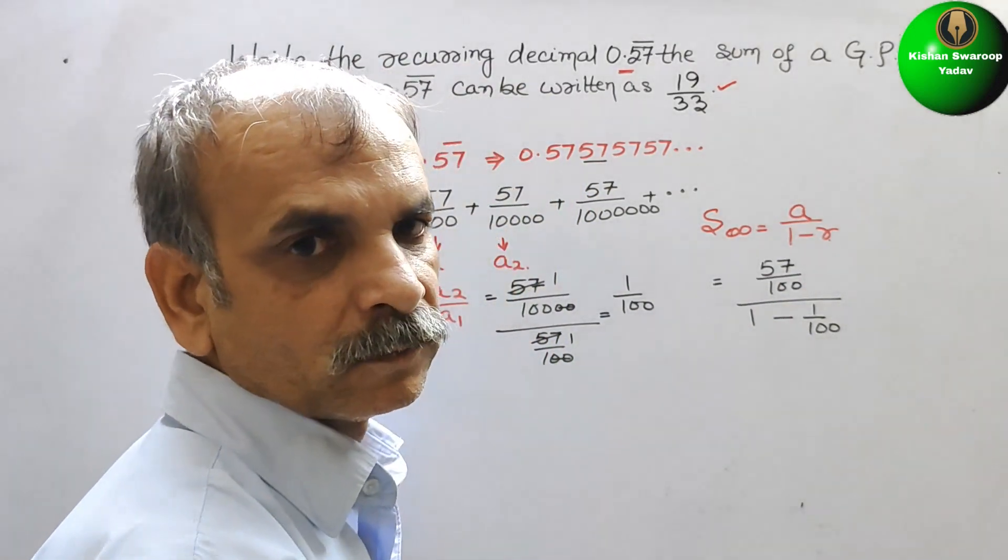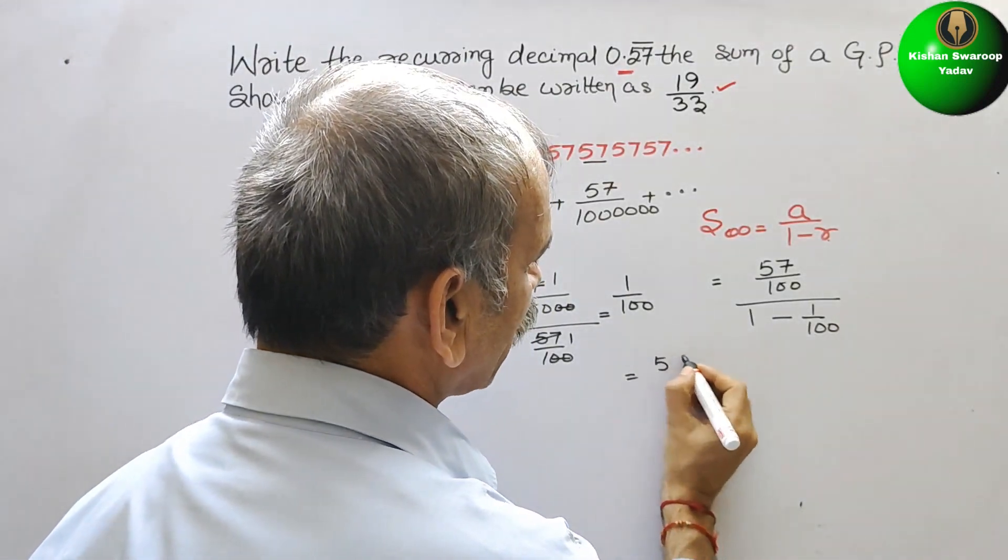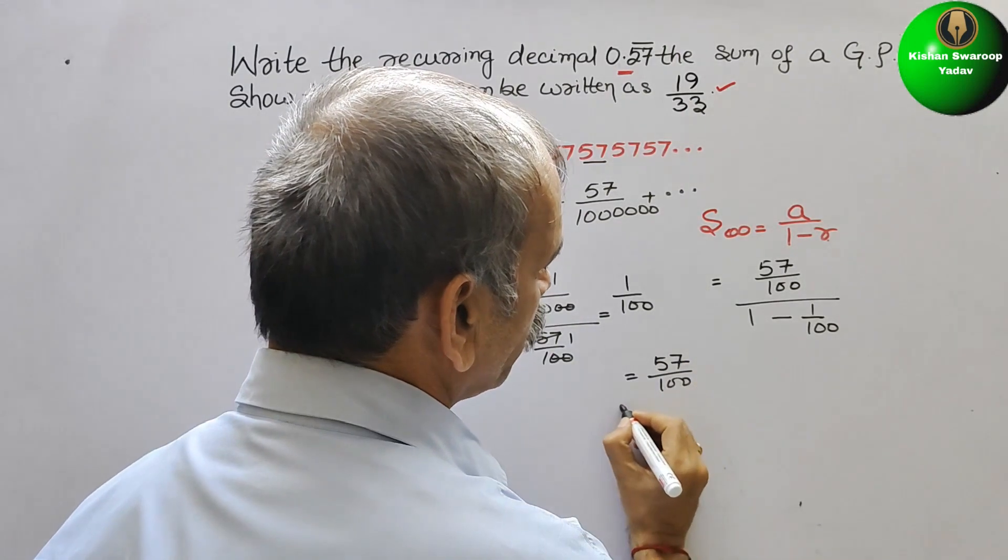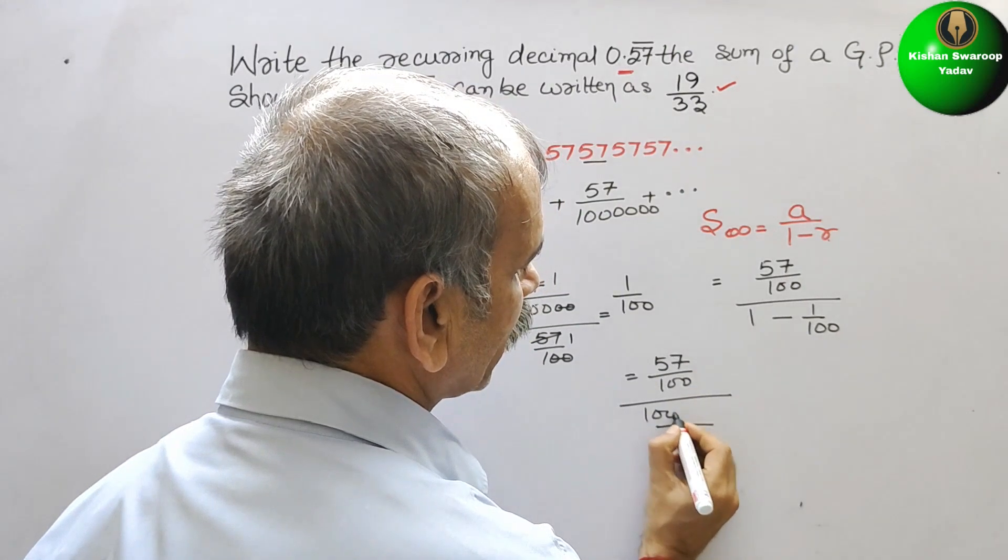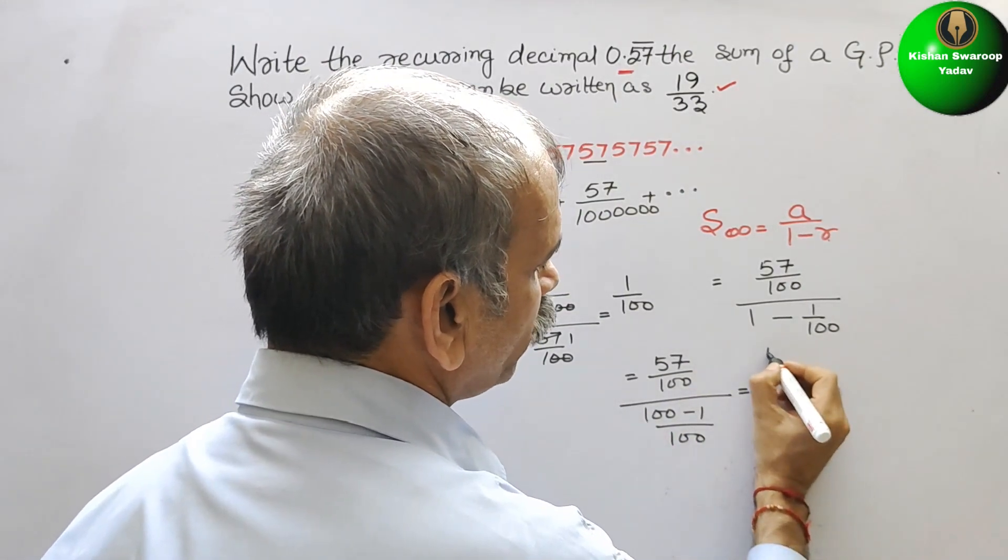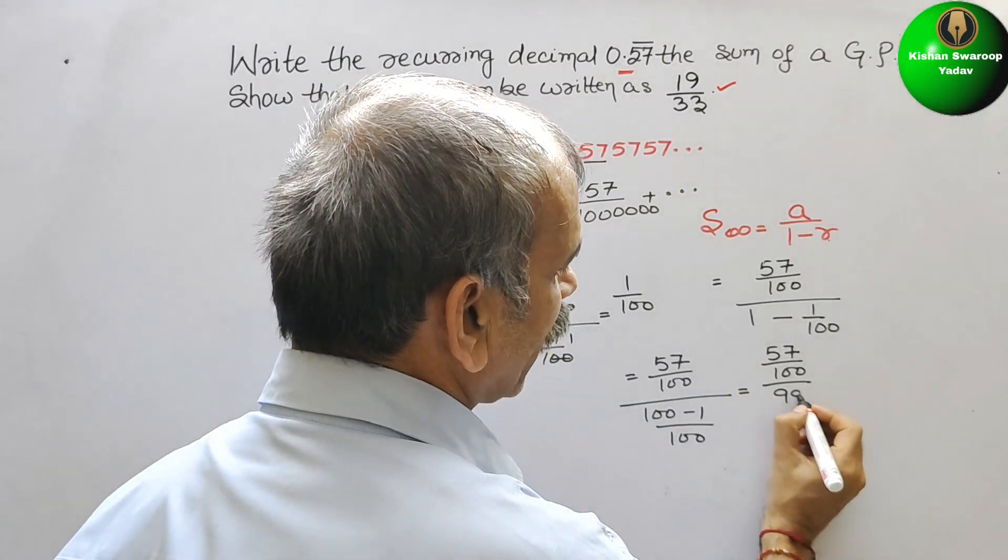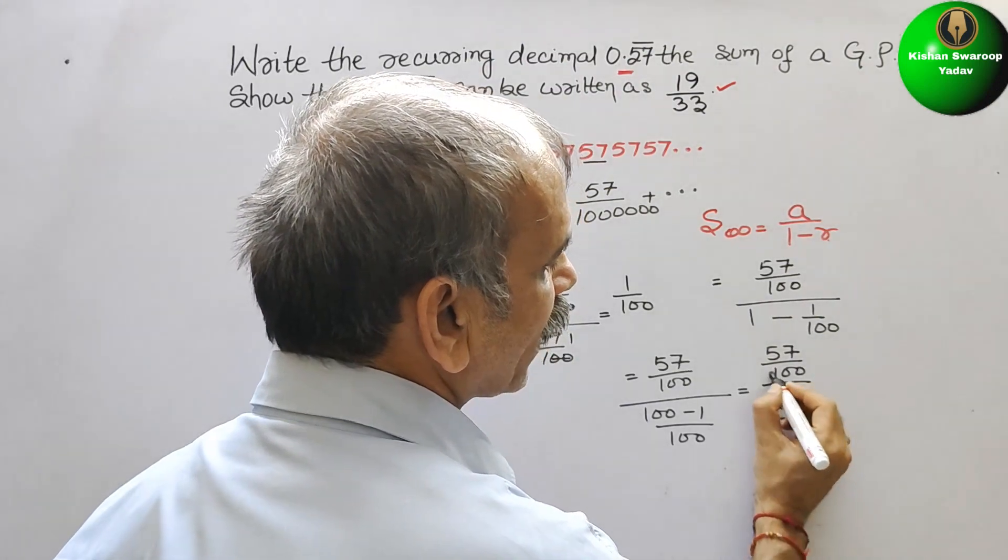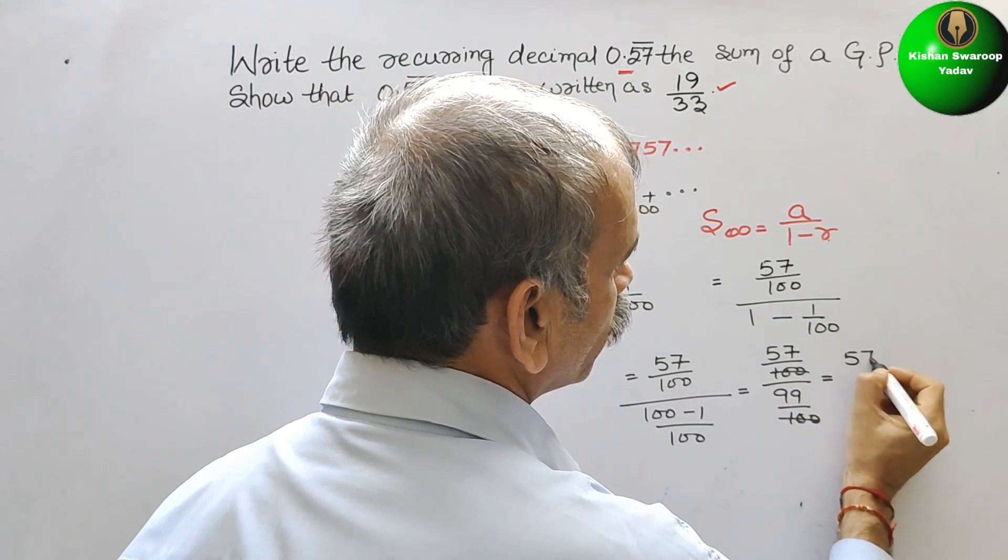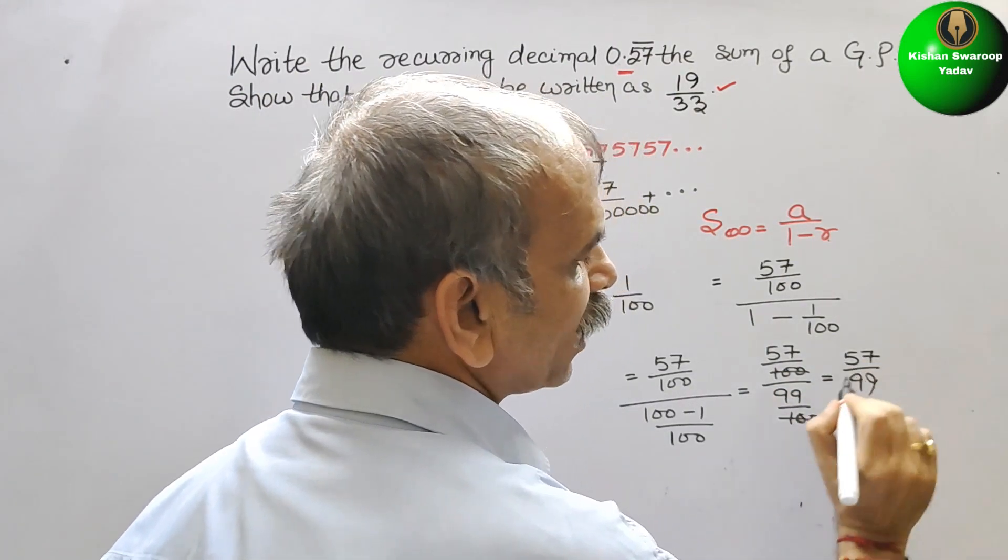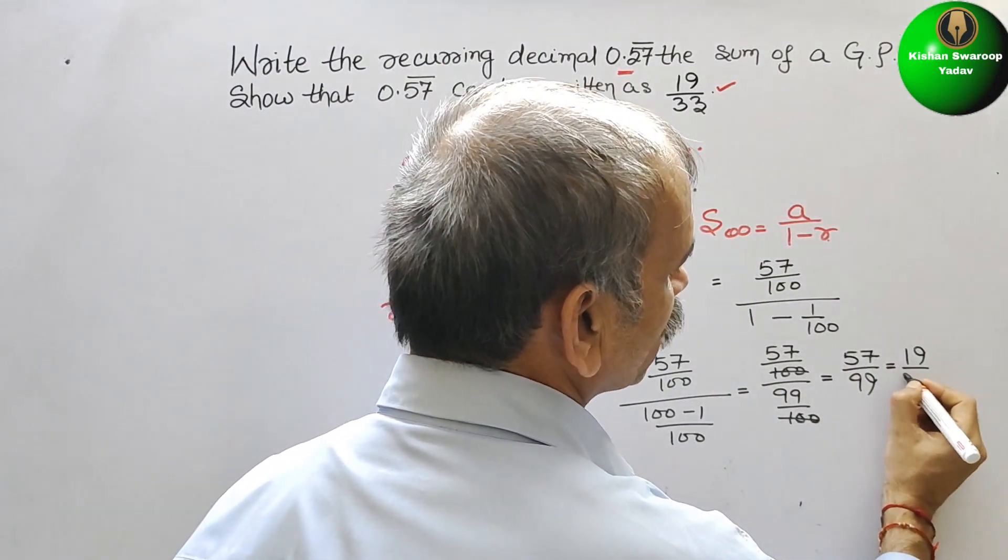Take the LCM at the denominator. So we will get 57 by 100 divided by 100 minus 1 over 100. That is equal to 57 by 100 divided by 99 by 100. So 100 and 100 gone. We will get 57 by 99. Just reduce it by 3. So we will get 19 by 33.